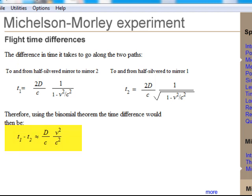If an ether frame existed, then the time difference along the two paths is just given by the expression shown here. This is a large enough difference, with the speed of the Earth being 28.8 kilometers per second, to be detected.